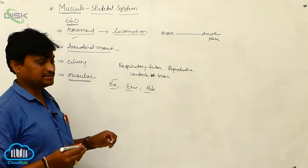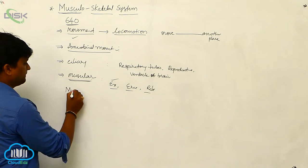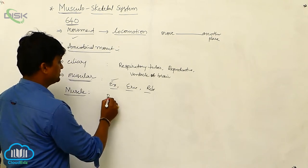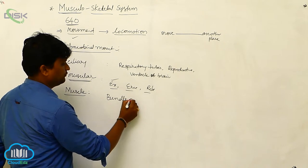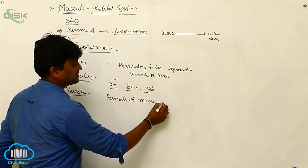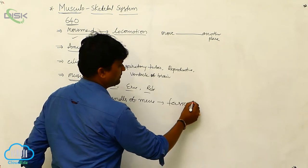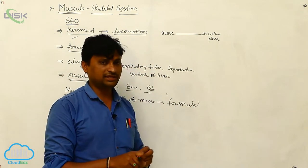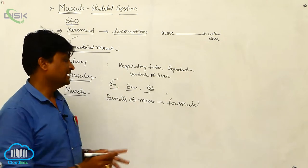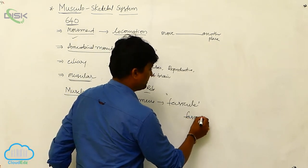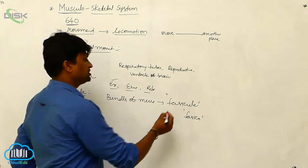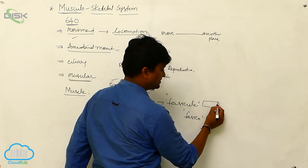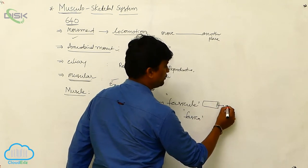Now we discuss the structure of muscle. A muscle consists of bundles of muscles, which we consider as a fascicle. These fascicles are covered by one connective elastic membrane, which we call fascia. Each fascicle consists of small tubules called myofibrils.